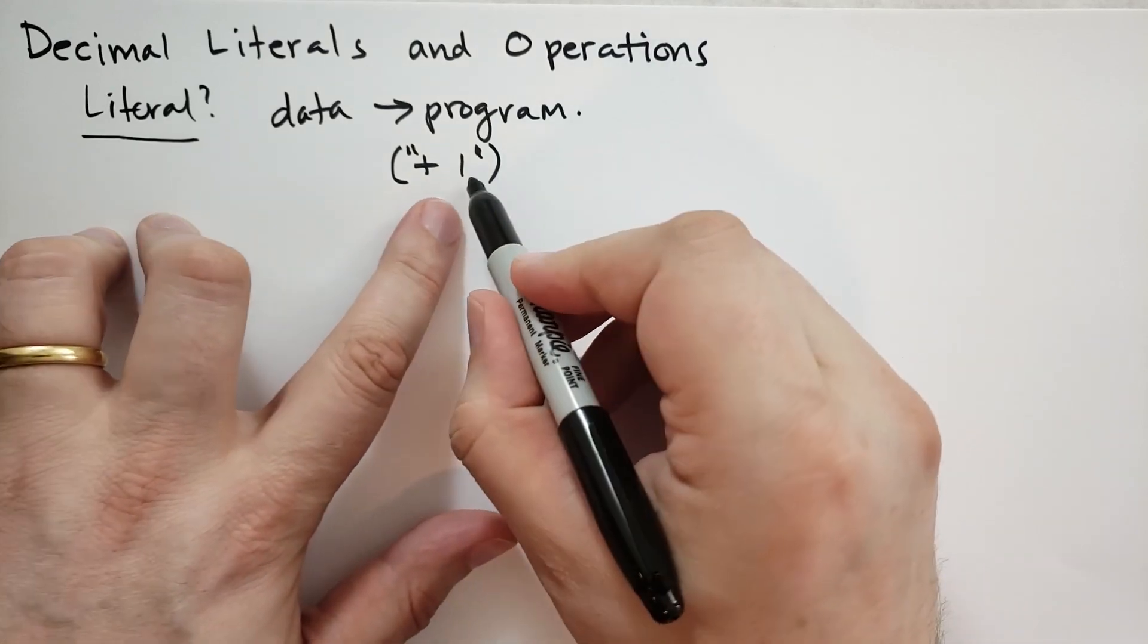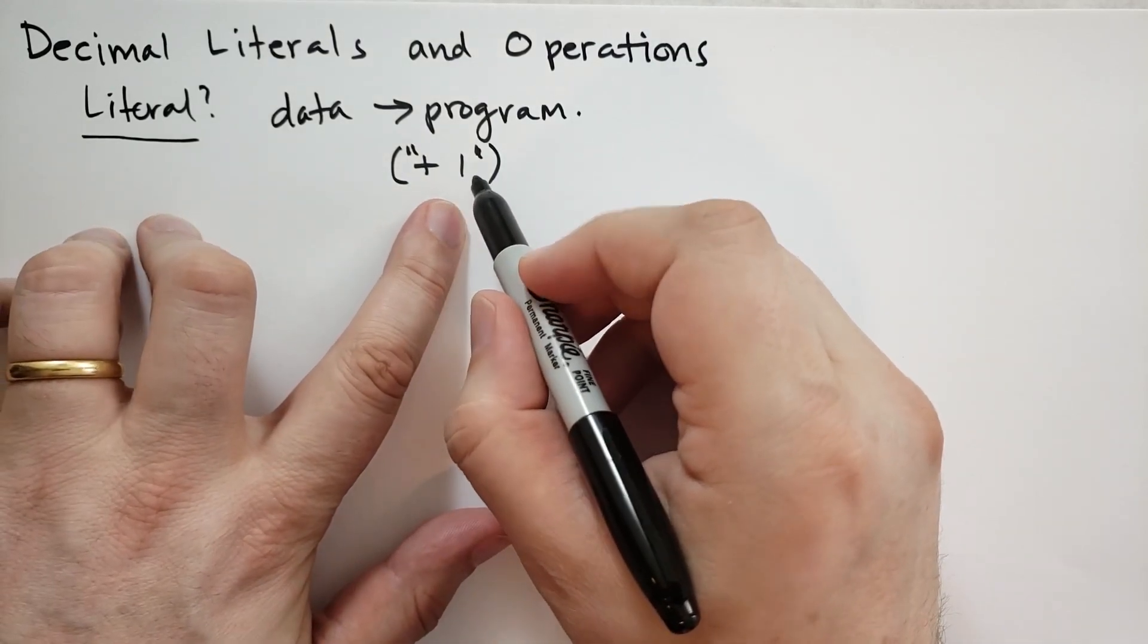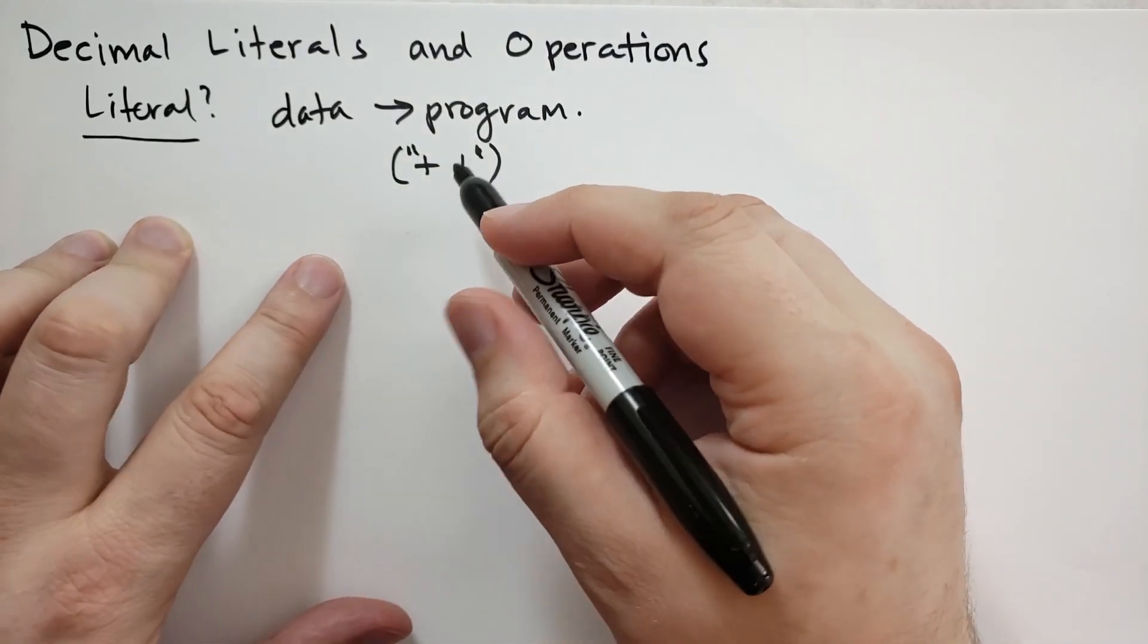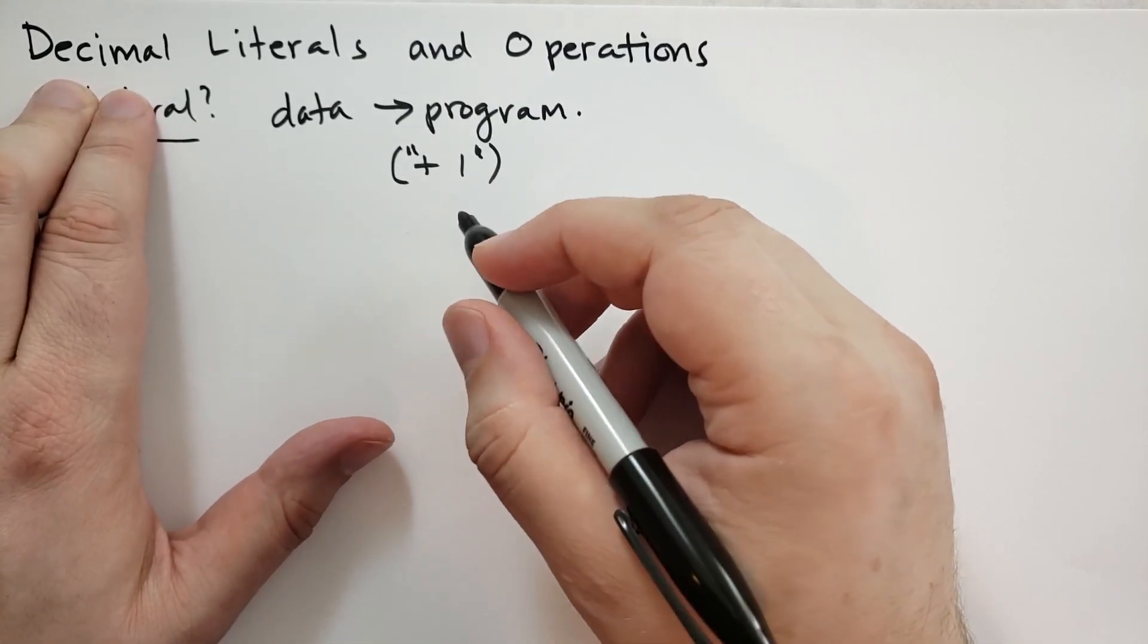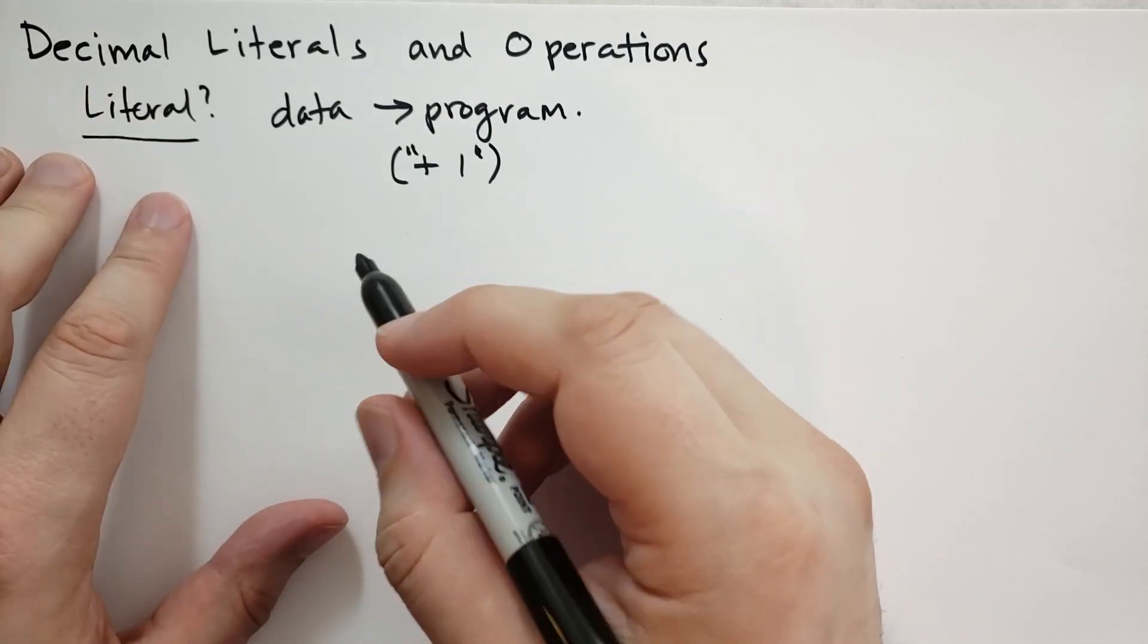Right? Well, that one would be a literal. In this case, it's a decimal literal. So a decimal is a system of notation. It's a way to write numbers. In this particular case, we're going to write integers.